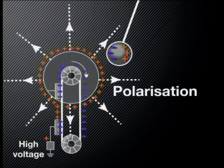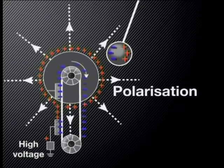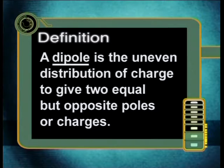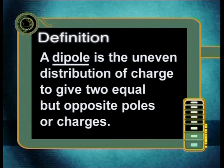This separation of charge on a neutral object is called polarization. As you can see, the two sides of the polystyrene ball have now opposite charges. They have formed what we call a dipole. A dipole is the uneven distribution of charge to give two equal but opposite poles or charges. The negatively charged pole of the ball is attracted to the large positive charge on the metal dome, and so the ball will move towards it.